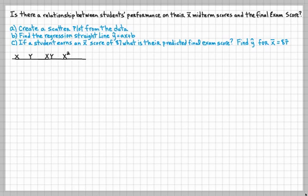If we're going to do a regression straight line, we're going to need x, y, and we're going to also need x times y and x squared. In this problem, it's already determined what is x, what is y, but the midterm scores are going to be x, and the final exam scores will be y. X, in this case, is the independent variable, y is the dependent variable.